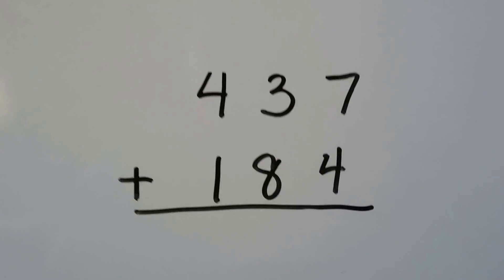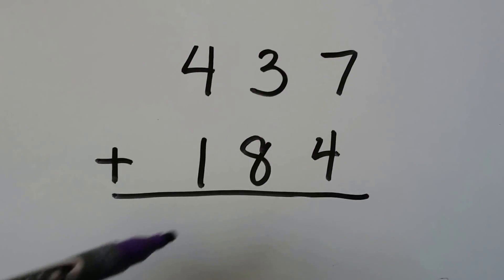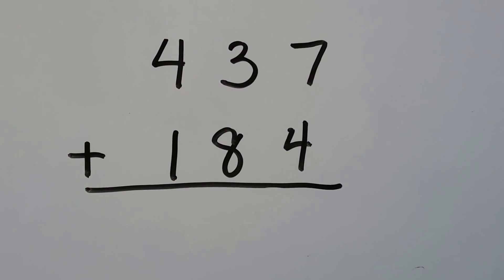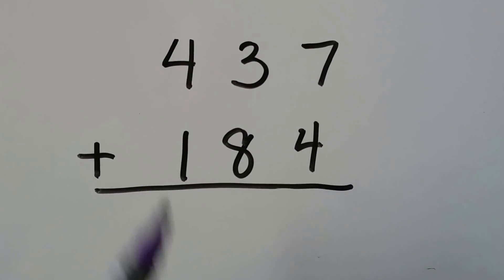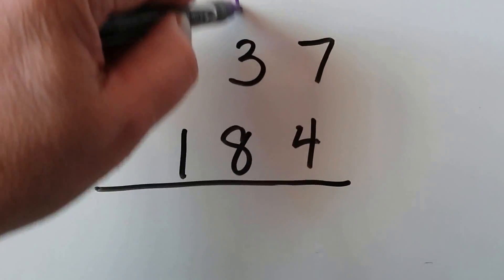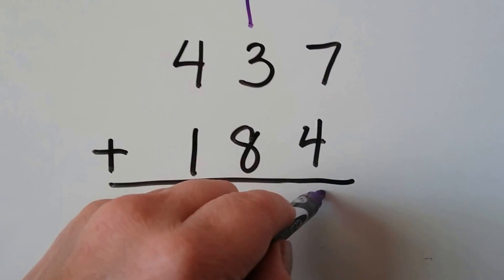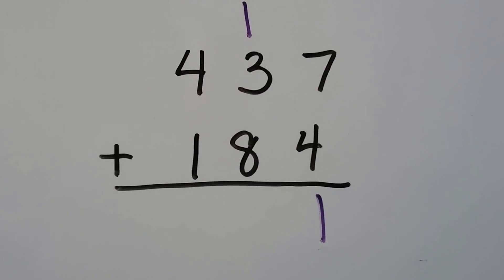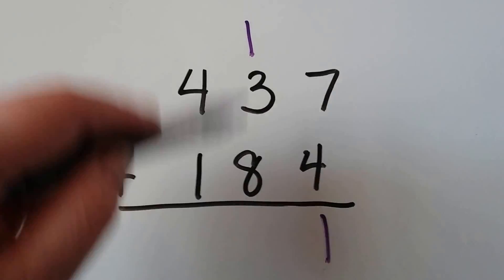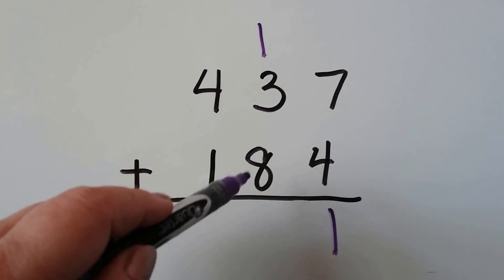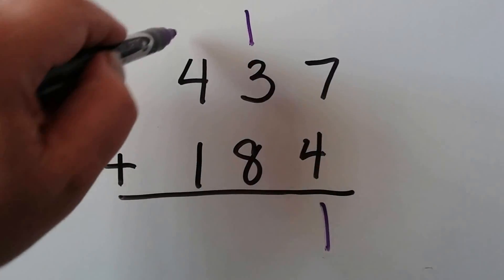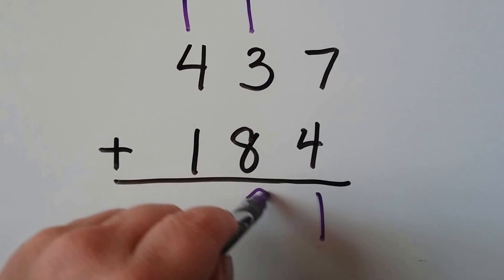Let's try it again. We start with the ones place: 7 plus 4 gives us 11. We regroup the 1 and put the other 1 in the ones place. We add the tens place, starting with the larger number 8, counting up to 12. We regroup the 1 and put the 2 down.